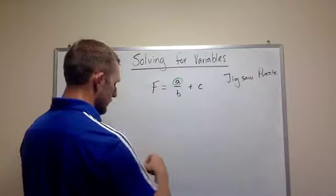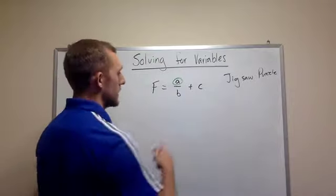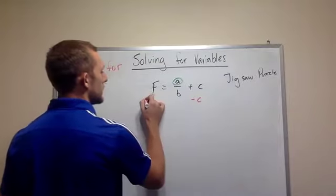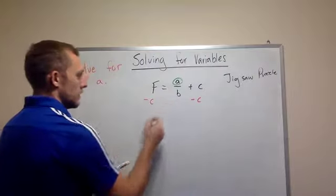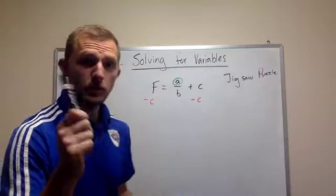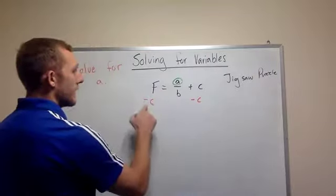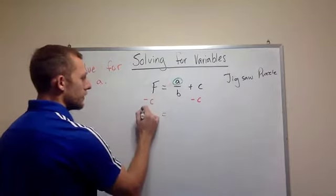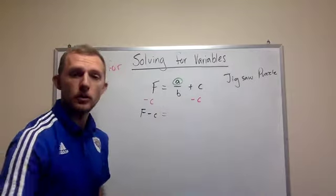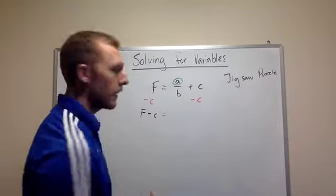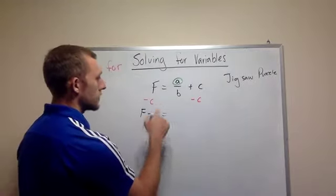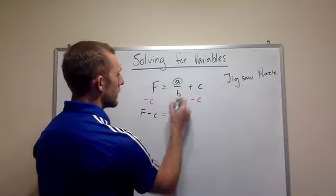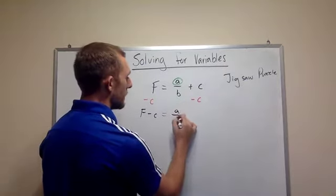So what we want to do is subtract C from both sides. So subtract C, subtract C. So make sure that you do this. Right now it's F minus C or negative C plus F. So just go ahead and bring it down like I've showed you before.